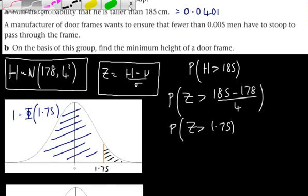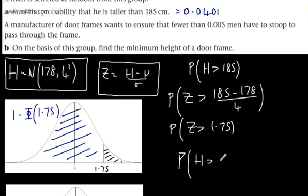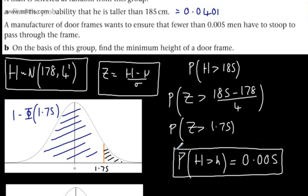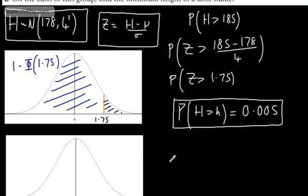So what we want to consider is the following. We want to consider the probability now of H being greater than h being equal to 0.005. So all I'm going to do is make a substitution. So initially I'm going to state that.